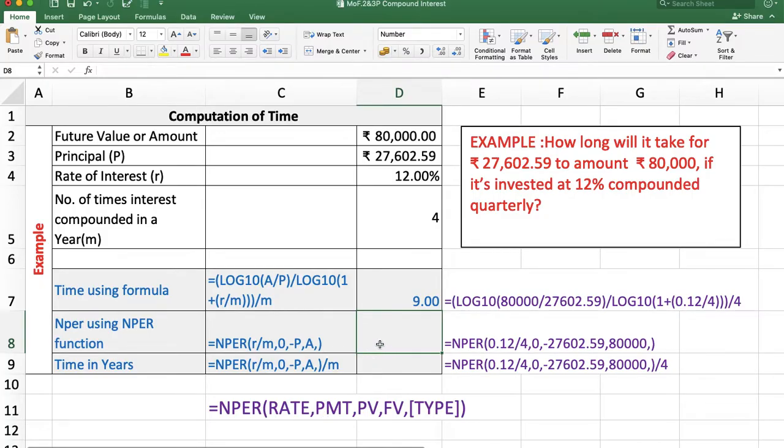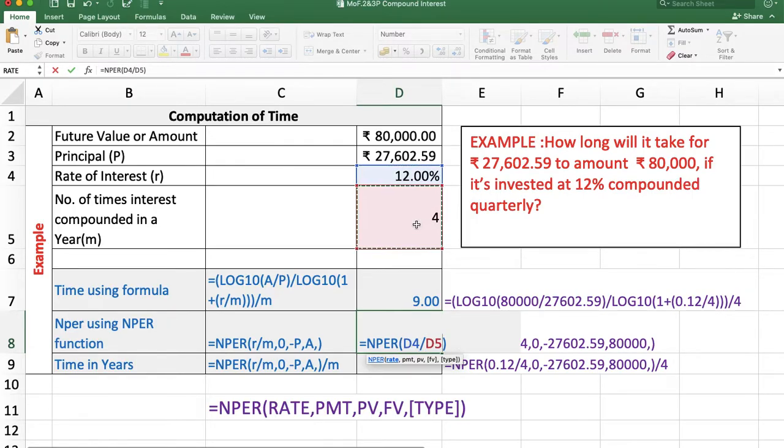Now using the NPER function: =NPER(12%/4, 0, -PresentValue, FutureValue). Rate is 12% divided by 4. PMT is 0 because there's no periodic payment. Present value is negative, then future value. Enter.